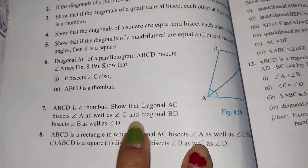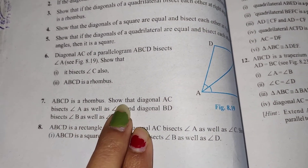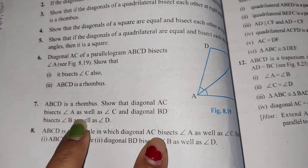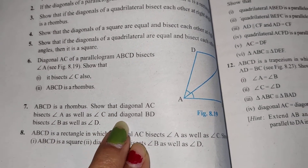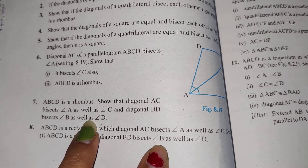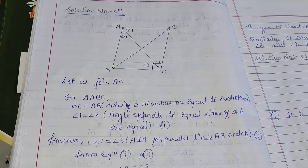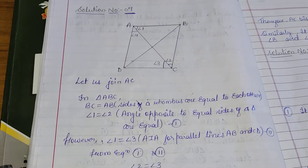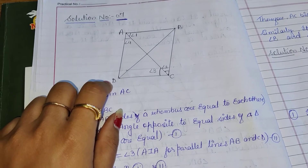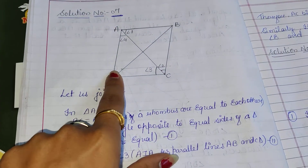Now we are going to start question number 7. ABCD is a rhombus. Show that the diagonal AC bisects angle A as well as angle C, and the diagonal BD bisects angle B as well as angle D. First, we draw the diagram ABCD. ABCD is a rhombus. AC and BD are the diagonals.